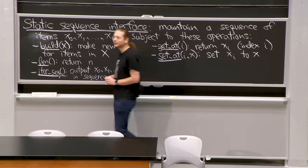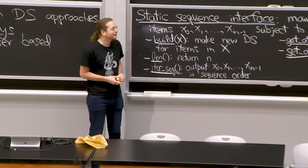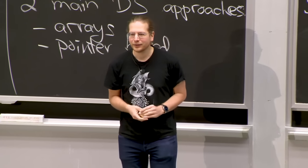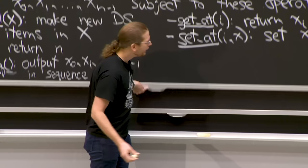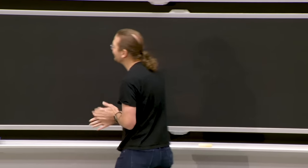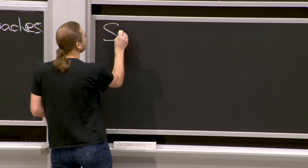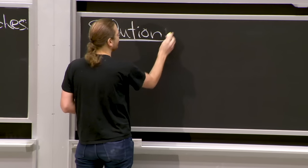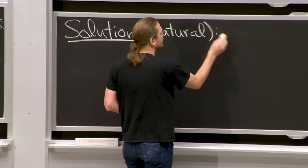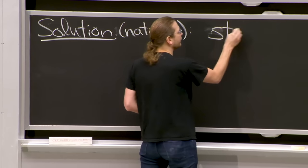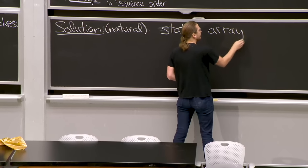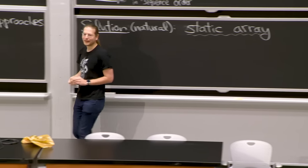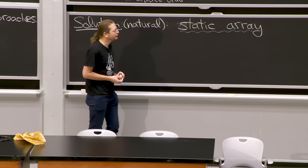This should remind you closely of a data structure. This is an interface - something I want to solve - and the obvious data structure that solves this is what I'll call a static array. In Python it's called a list, but I prefer to call it an array. There are no static arrays in Python - only dynamic arrays, which we'll get to. But I want to talk about what a static array really is, and this relates to our model of computation, which we call the word RAM.